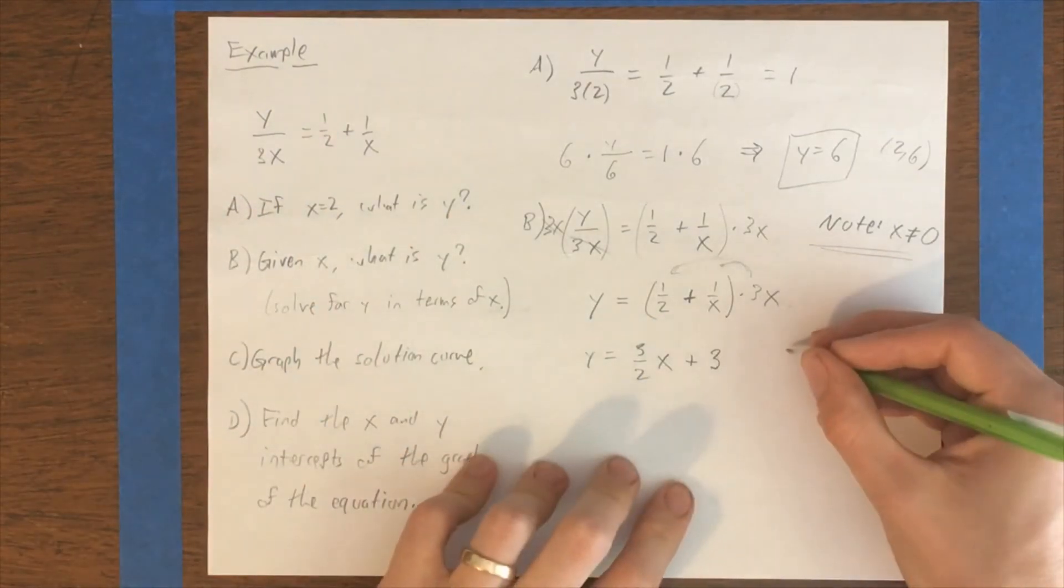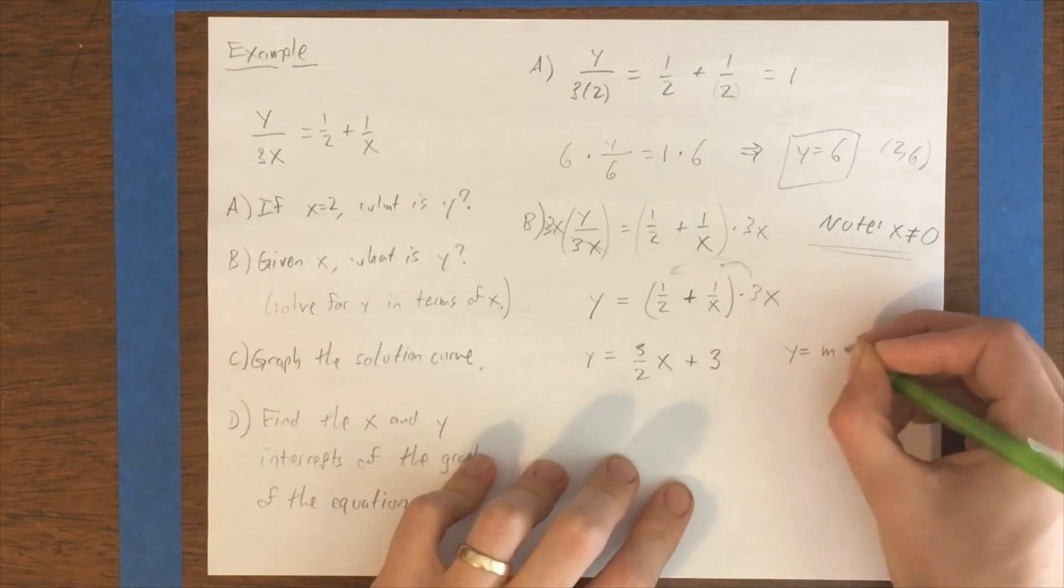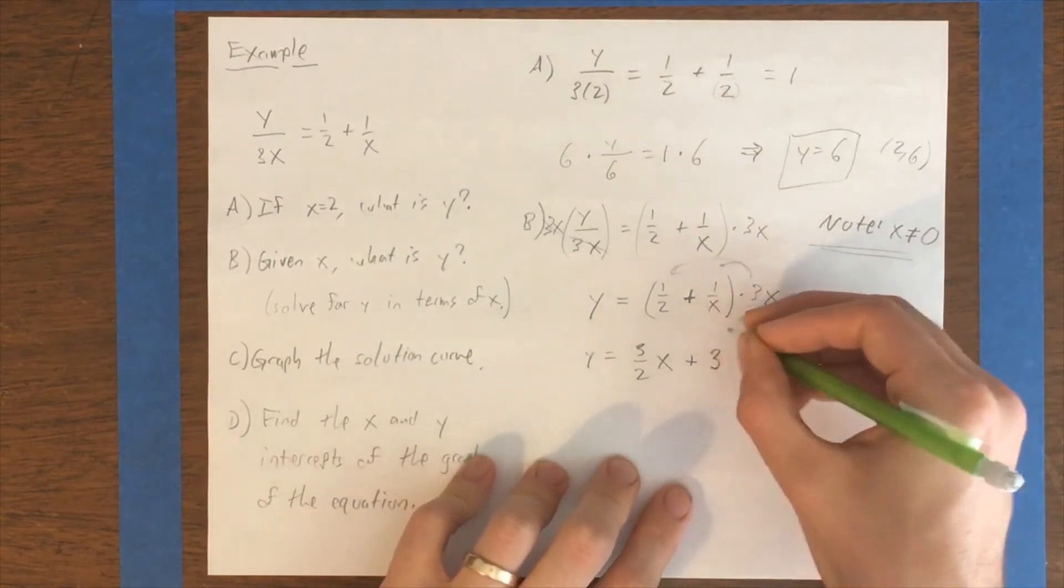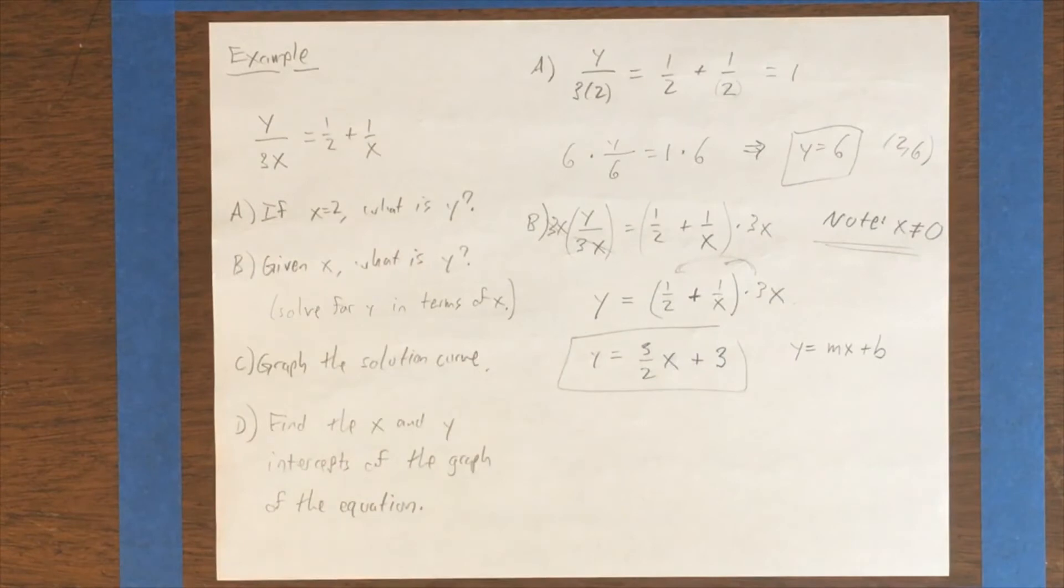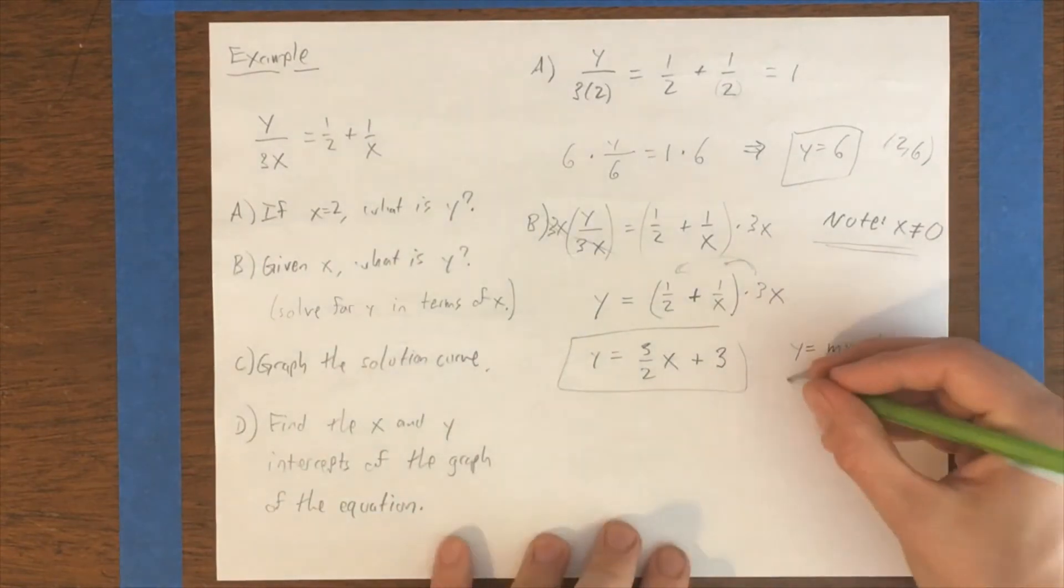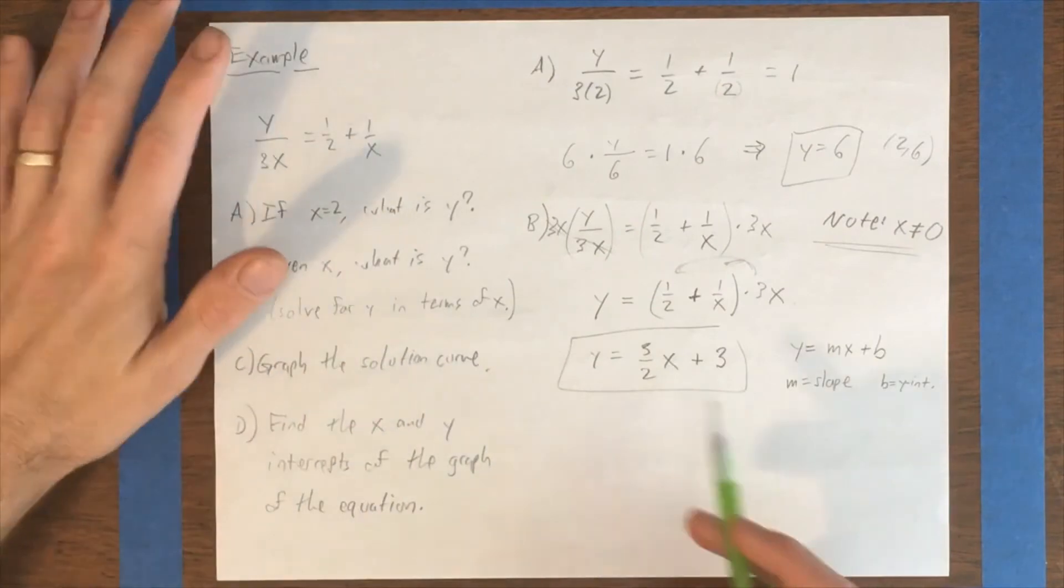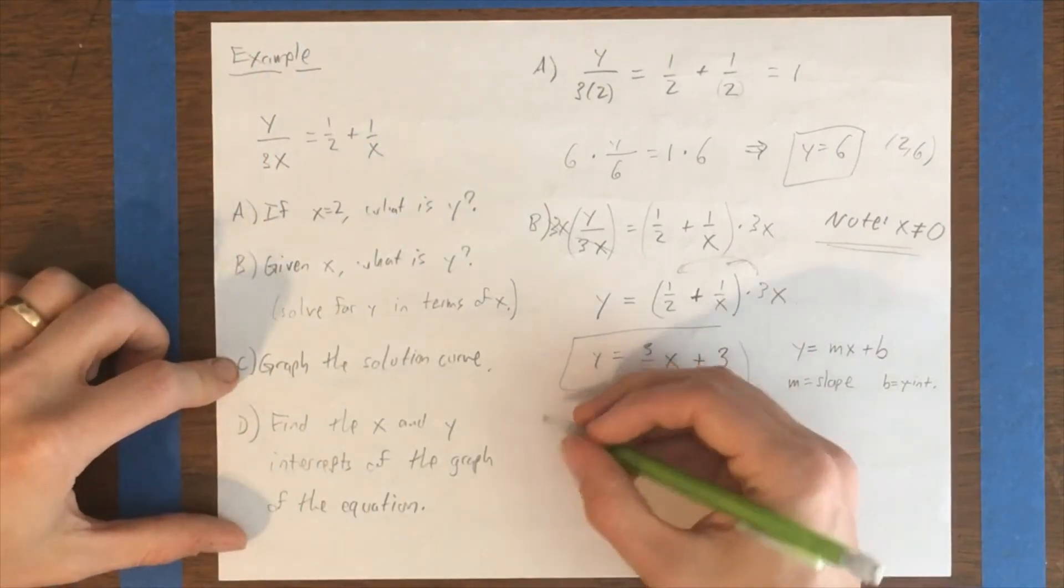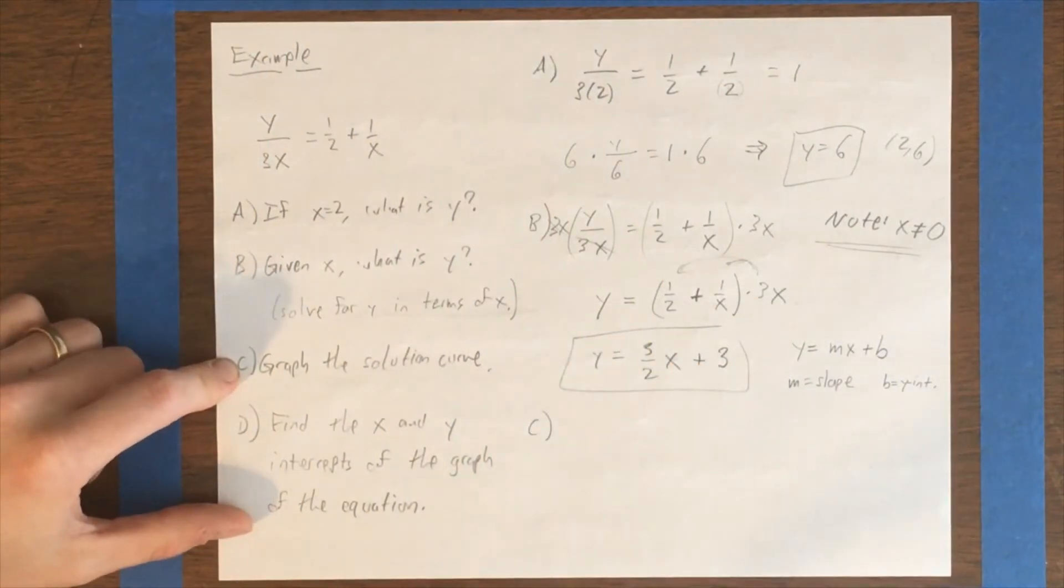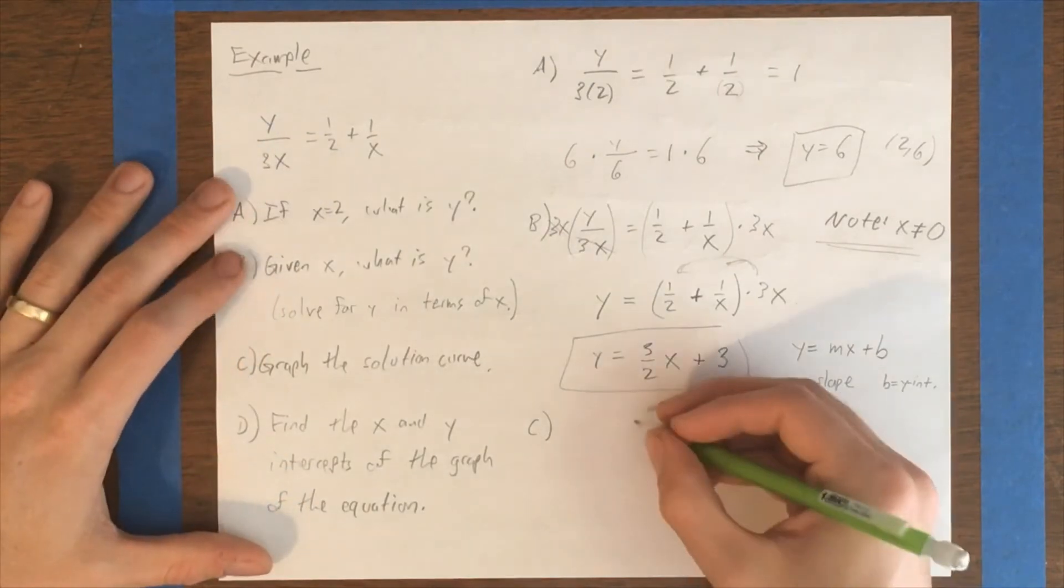And notice that this is in the form y equals mx plus b, right? Which means it's a linear equation. The m in this format is the slope of the line, and the b is where the y-intercept would be. So I can use that to help me do part C here, which is to graph this equation.